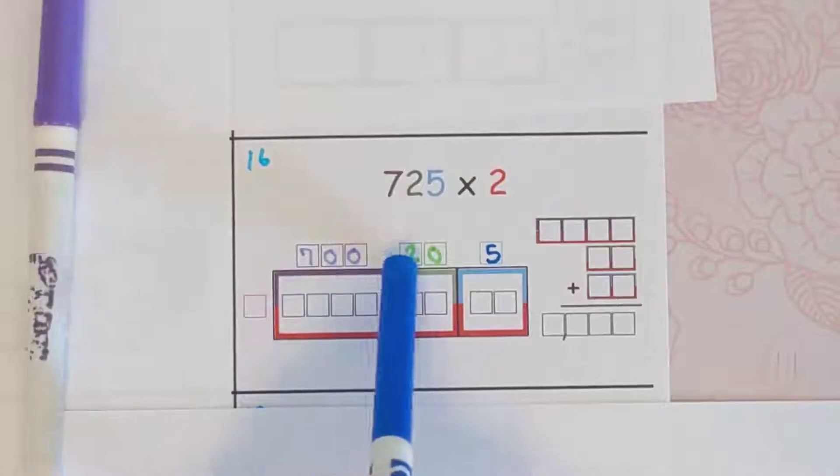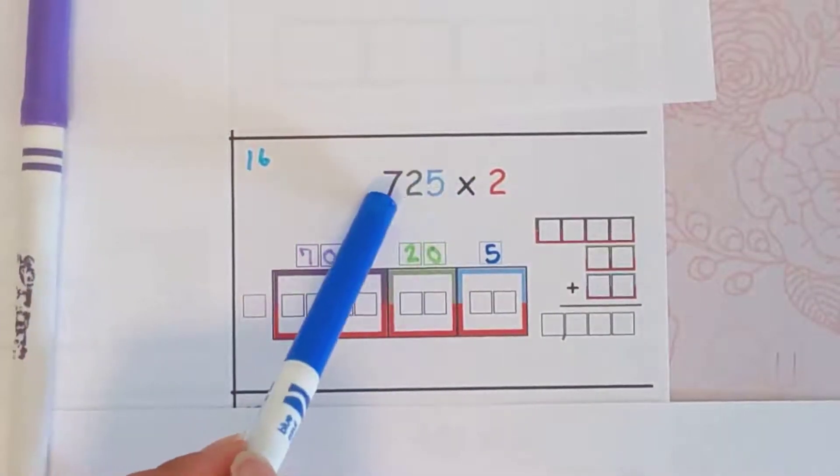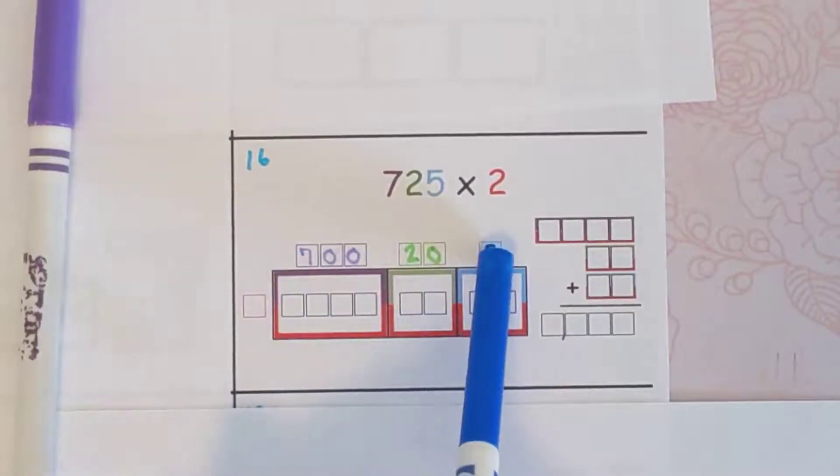So it's 700 plus 20 plus 5 for this first number. These guys are all on the same team—they came together, they're all in the same number, so they're next to each other.